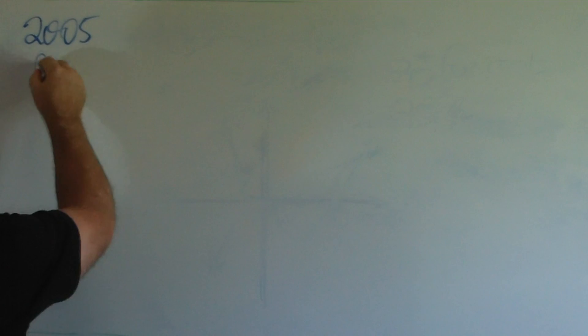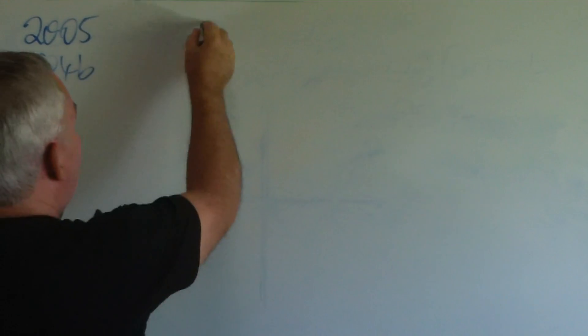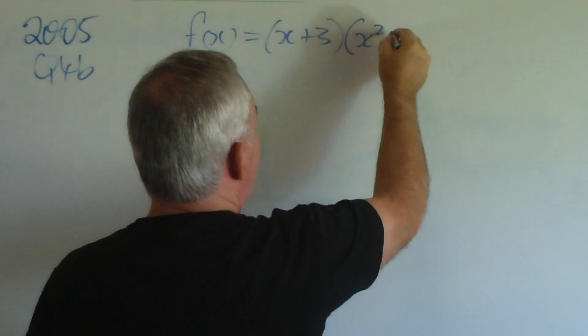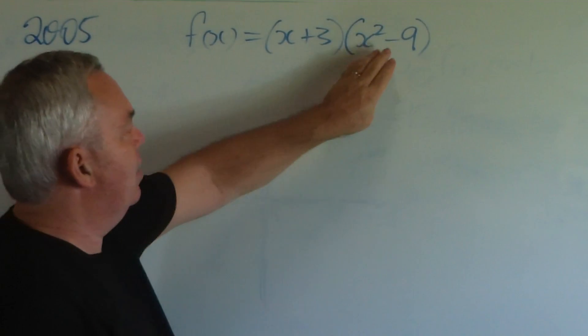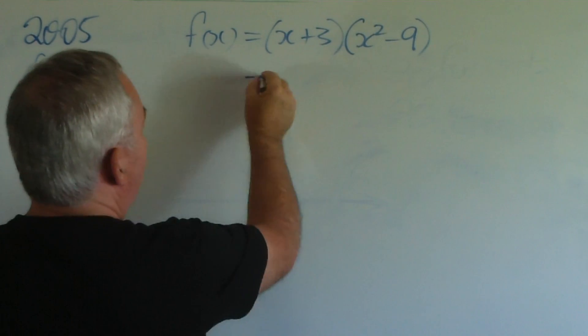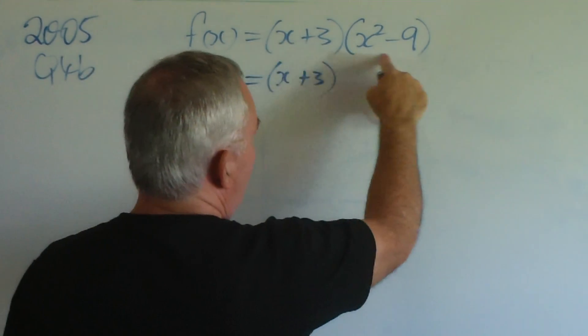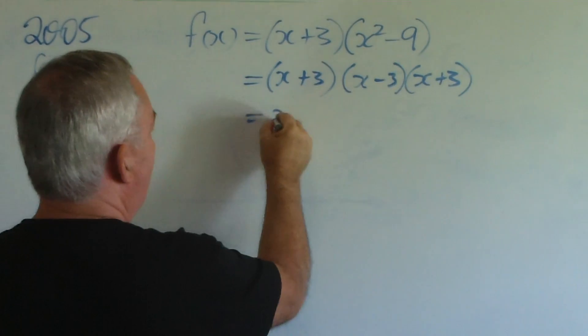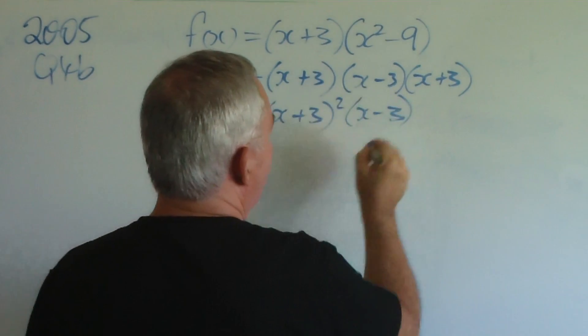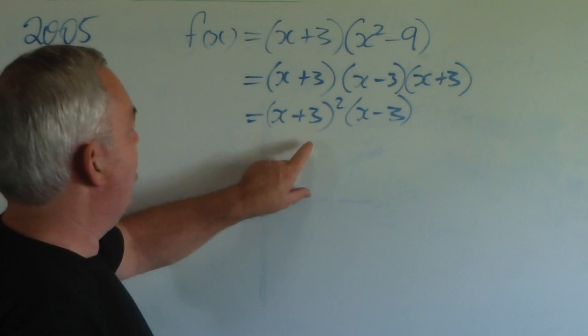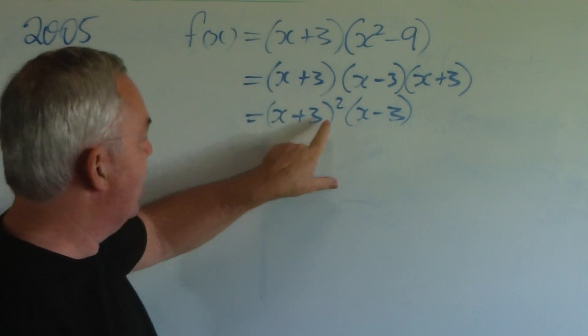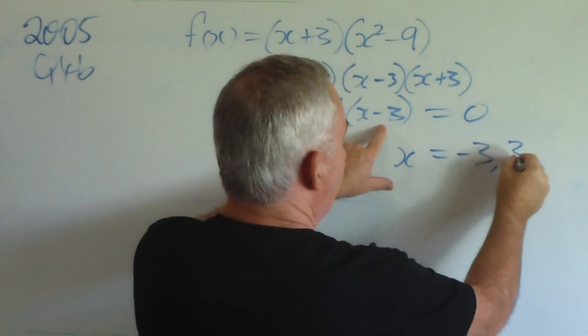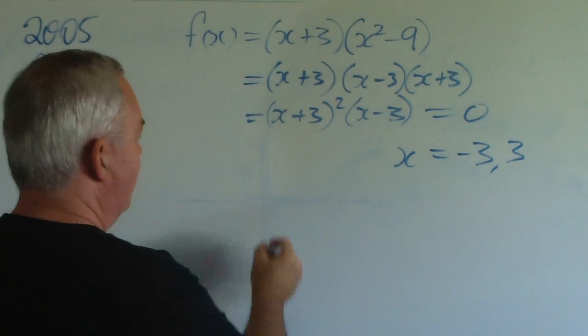2005, Question 4b. The function this time was a little bit tricky. It is factorised, but not fully. Now, I hope you can see that we have a difference between squares here. This factorises into (x - 3)(x + 3). And you can see now that we have a factor here twice. So, it was a little bit of a trap. Yes, we did have a root at minus three, but it's actually a double root. So, we set equal to zero for the roots, and the roots are at minus three and plus three, bearing in mind that minus three is going to be a double root.